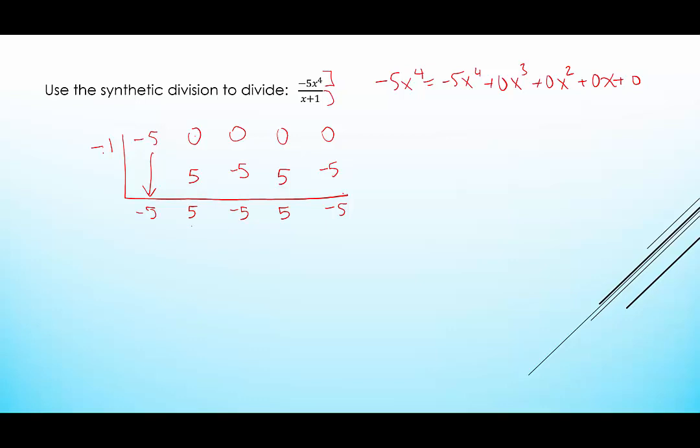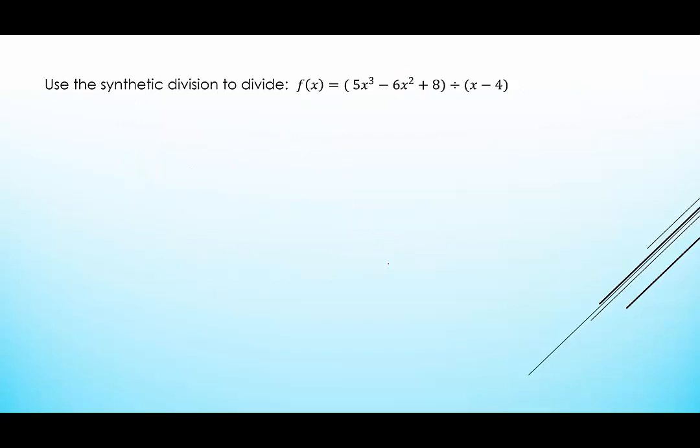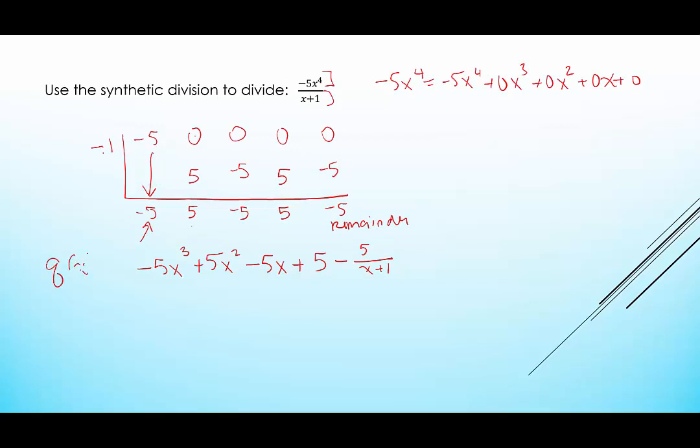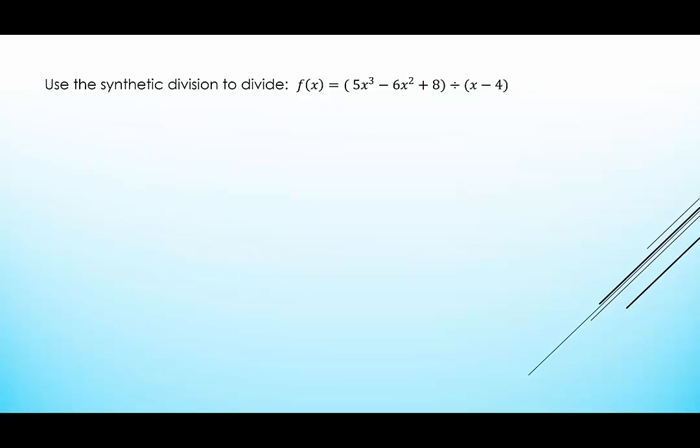The reason this just ended up alternating is because our dividend was one single term. These are the coefficients, constant, and remainder of the quotient function. The quotient function is one degree less than the dividend, so this is negative 5x cubed plus 5x squared minus 5x plus 5 minus, and this one is the remainder. We take the remainder and write it over the divisor, so this would be 5 over x plus 1, and this would be our quotient function q of x.